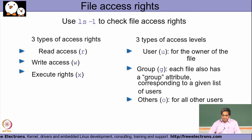You will typically find three different access rights: read, write, and execute. These three access rights are given for three categories of users: the user (that is the owner of the file), the group, and the others.